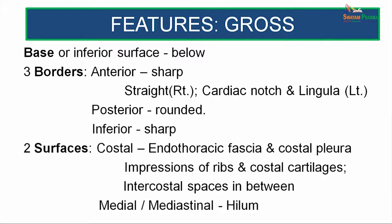The surfaces are two: the costal surface, which is covered by the pleura and separated from the lateral thoracic wall by the endothoracic fascia. It is more or less smooth but bears the impressions of the ribs and costal cartilages, alternating with the elevations of the intercostal spaces. The medial or mediastinal surface is specific and bears impressions of very many structures, and differs on the right side and left side.